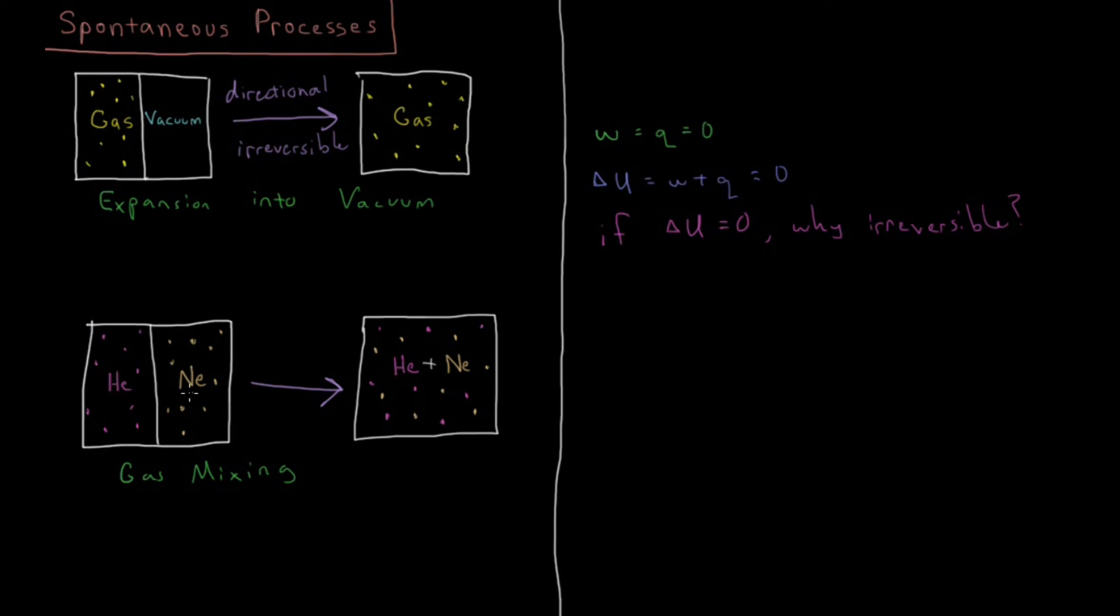Whereas here you go from a state where it's ordered being only helium on the left, only neon on the right, very sorted, very orderly on the right. Then they mix together and you don't know if you pick a random particle on the left side whether it's helium or neon. Whereas if you pick a random particle over here you know it's helium.